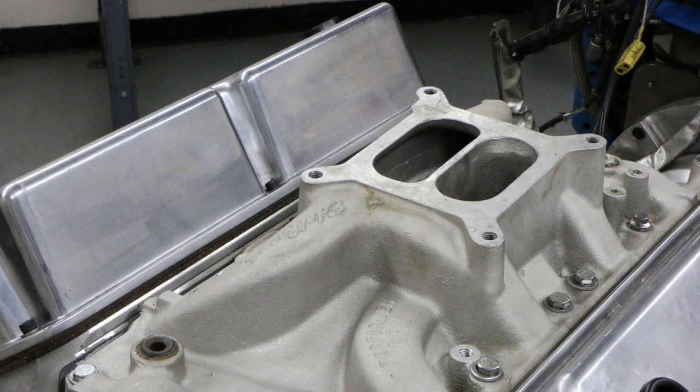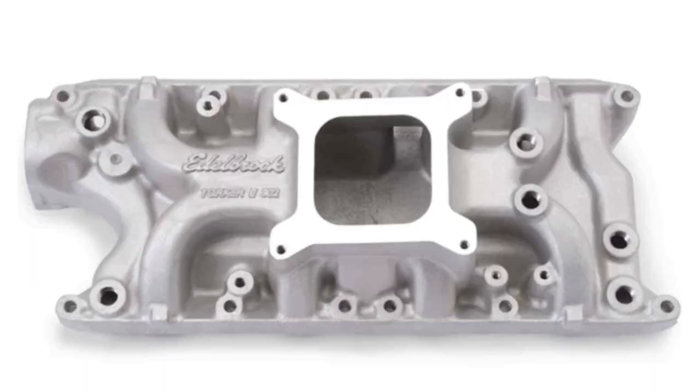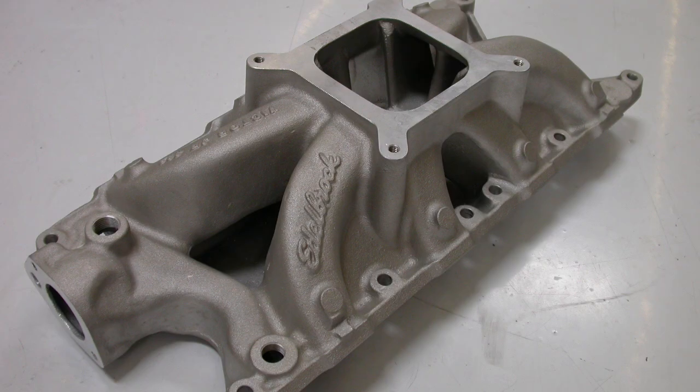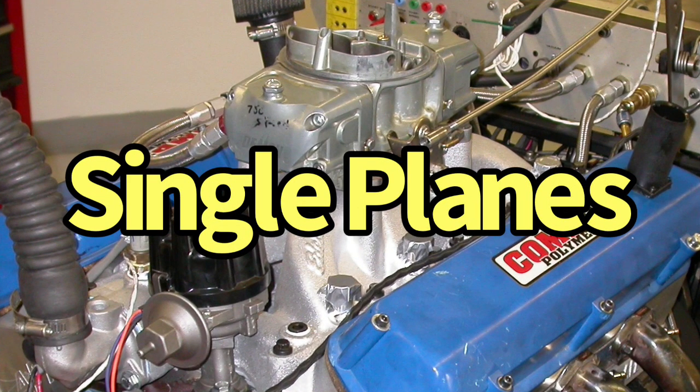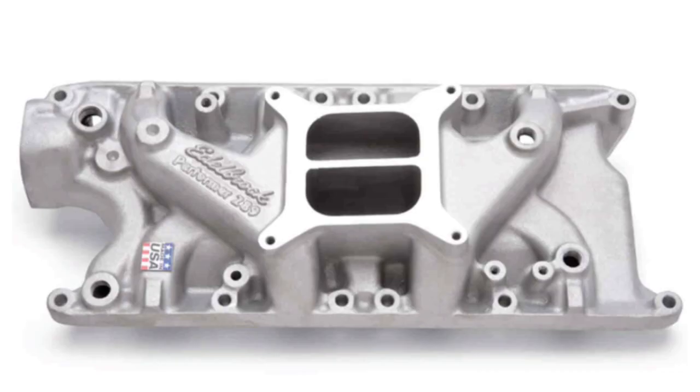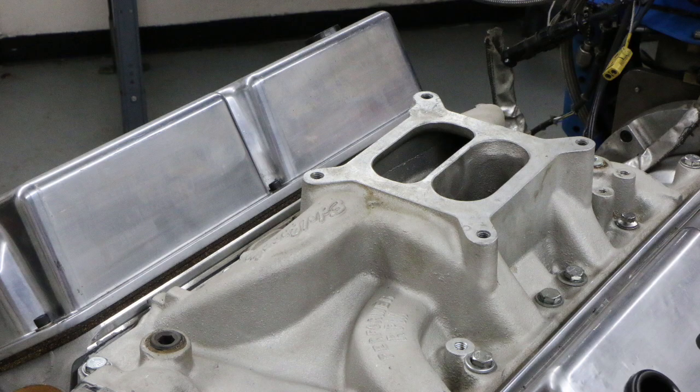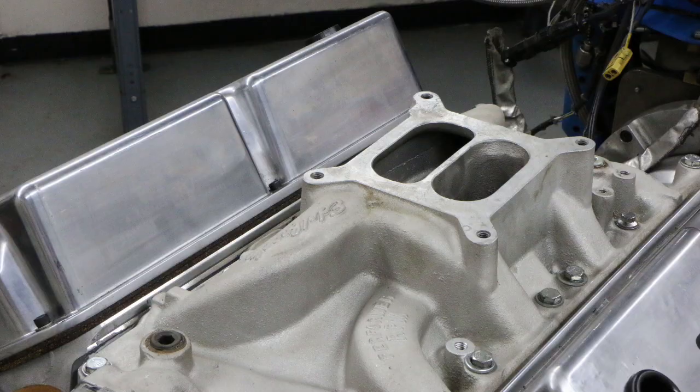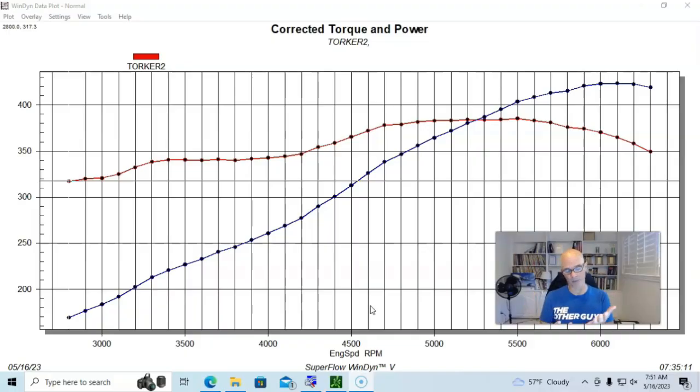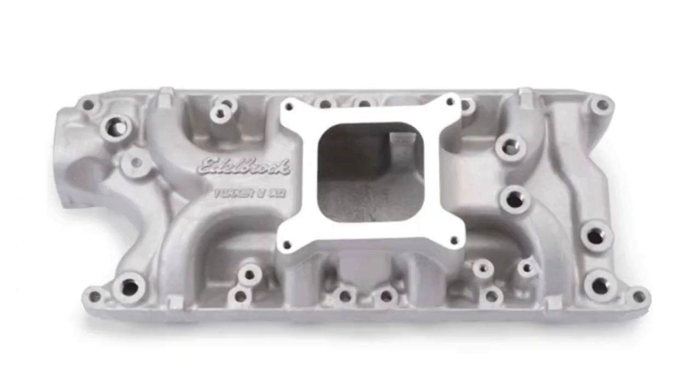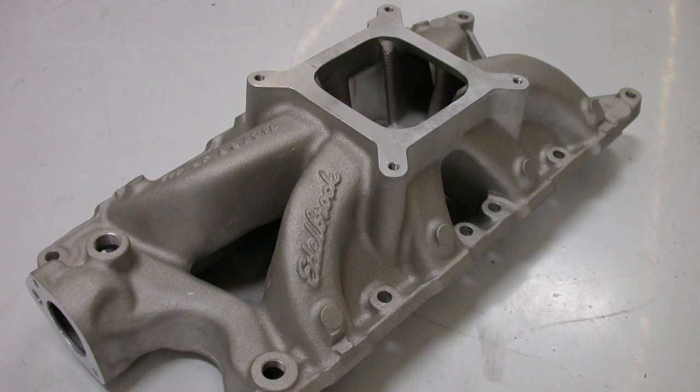Now that we've taken a look at our dual planes, let's check out a comparison between our single planes and then we can kind of mix and match the two. Now that we've taken a look at the comparison between our dual plane intake manifolds, the Performer 289 and the Performer RPM, let's take a look at our single plane manifolds. The two that we compared: Edelbrock Torker 2 versus the Edelbrock Victor Jr.